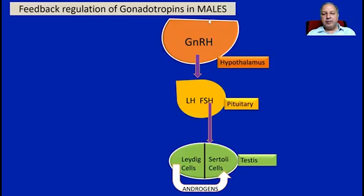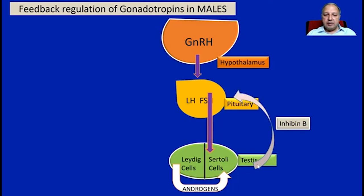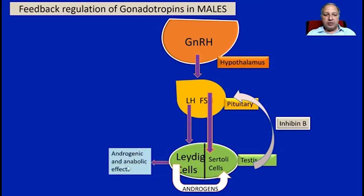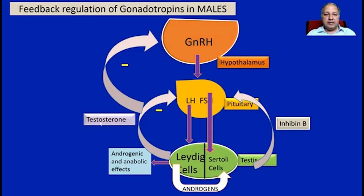In males, GnRH is secreted from the hypothalamus, stimulating the release of LH and FSH from the pituitary. FSH acts on Sertoli cells, which produce inhibin B, causing feedback inhibition of FSH. LH stimulates the Leydig cells to release androgen hormones, producing androgenic and anabolic effects. The main hormone is testosterone, which causes inhibition both at the level of the anterior pituitary and inhibition of GnRH release, completing the feedback loop.